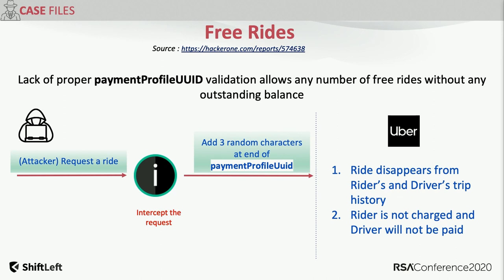This same modus operandi played out with Uber. An attacker requested a ride and, as part of the recon process, sensed all parameters participating in the transaction. They began enumerating by randomizing and applying numbers until landing on a specific one called payment profile UUID. By adjusting the last three random characters of the payment profile UUID, the ride disappeared from the history of both the rider and the driver — yet the ride was fulfilled. An attacker was availing free Uber rides perpetually by adjusting that parameter, with no log — so WAF and endpoint systems were not lighting up.